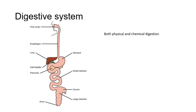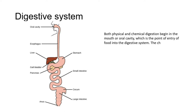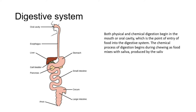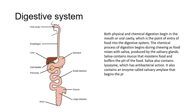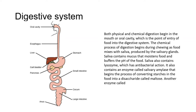Moving on to the digestive system. Both physical and chemical digestion begin in the mouth or oral cavity, which is the point of entry of food into the digestive system. The chemical process of digestion begins during chewing as food mixes with saliva, produced by the salivary glands. Saliva contains mucus that moistens food and buffers the pH of the food. Saliva also contains lysozyme, which has antibacterial action, and an enzyme called salivary amylase that begins converting starches into a disaccharide called maltose. Another enzyme called lipase is produced by cells in the tongue to break down fats.